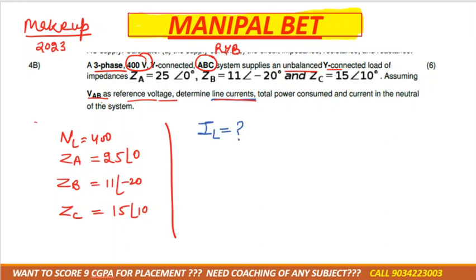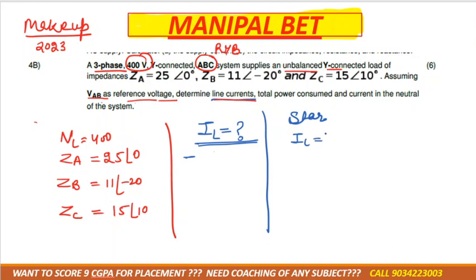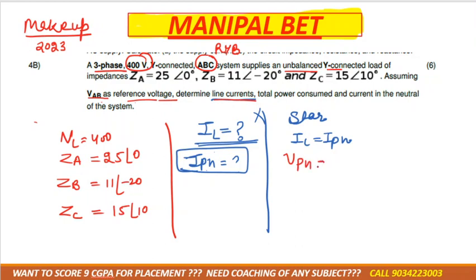We need to calculate IL. As we already know, in a star connection IL is equal to IPH. So we need to calculate IPH first. In a three-phase system, IPH comes from the formula: VpH = IPH × ZpH.